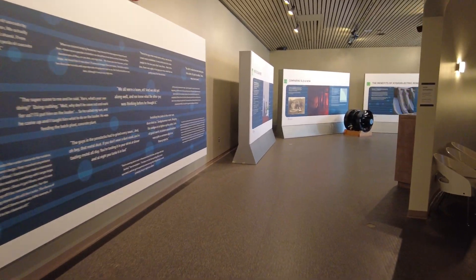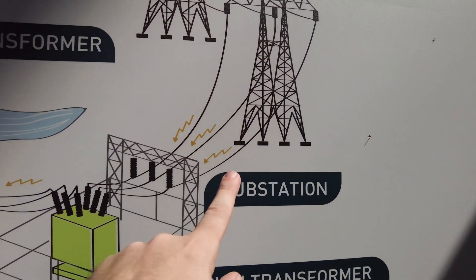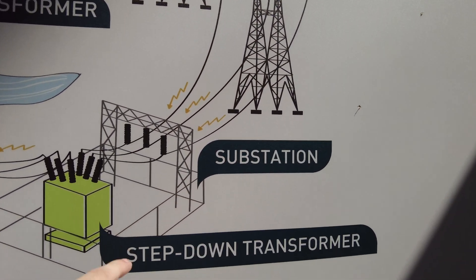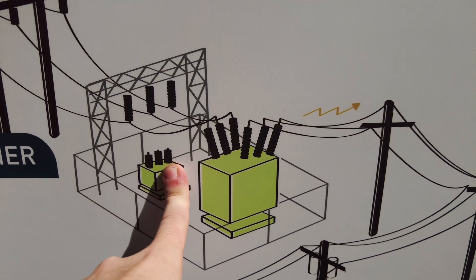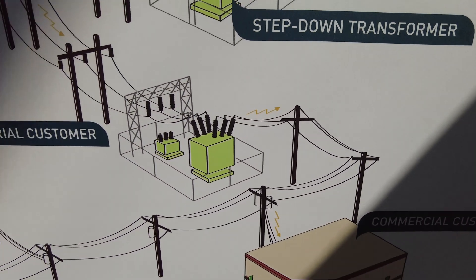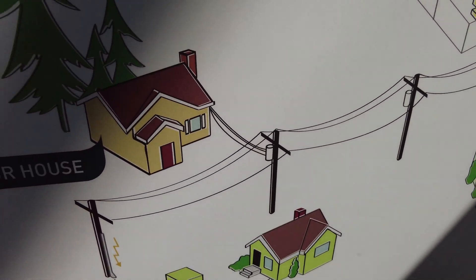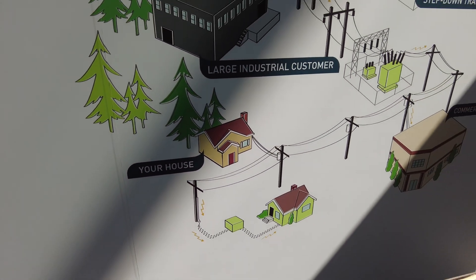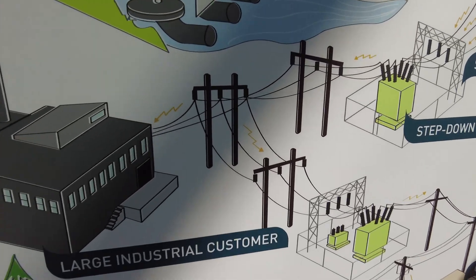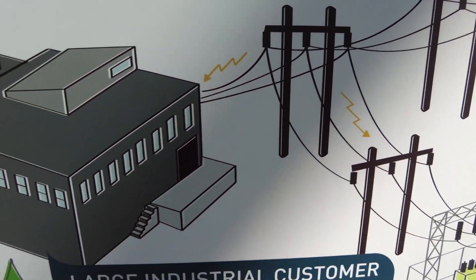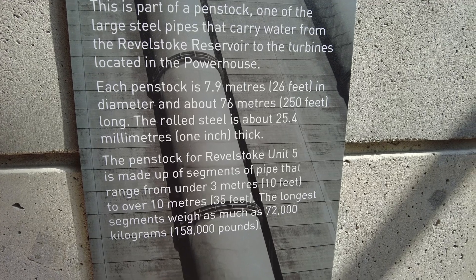The long journey to your house: generator, turbine, transformer, power lines, substation, step-down transformer - keeps moving. There's another step-down transformer station, then it goes to the commercial customer, then to your house. You can see the gradual reduction of voltage through each step-down transformer. And some customers are going hard line right into the plant. That's the full power delivery system.